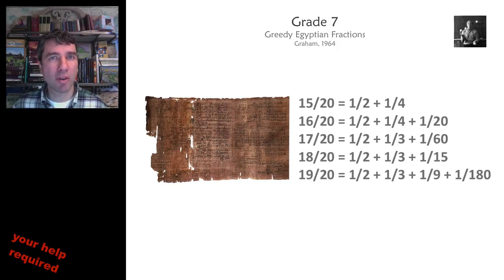In 1964, Ron Graham asked, what fractions can you decompose using only odd Egyptian fractions? So those are fractions that have an odd denominator.